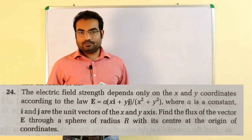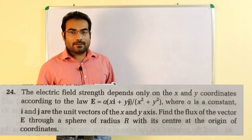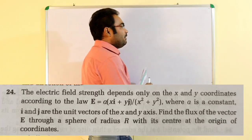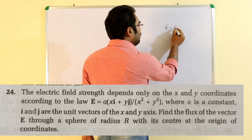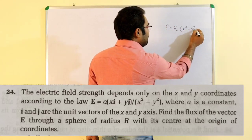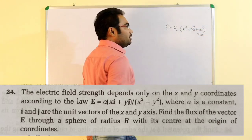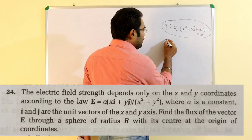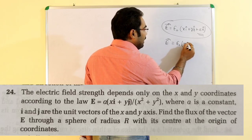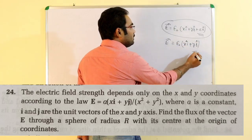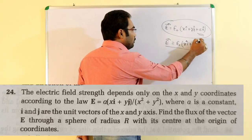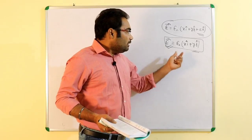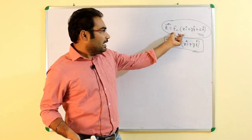This is a planar electric field. A planar electric field of this form corresponds to a line charge. For comparison, an electric field of the form E = ρ(x i-cap + y j-cap + z k-cap) corresponds to a point charge. But when the electric field is given as E = A(x i-cap + y j-cap), this corresponds to a line charge configuration.